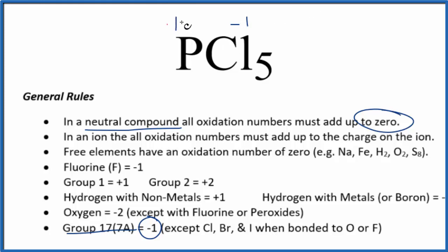This has to be, the phosphorus has to be a positive 5 for everything to add up to zero. So we can check our work. 5 times negative 1, that's negative 5, plus positive 5, we get zero.